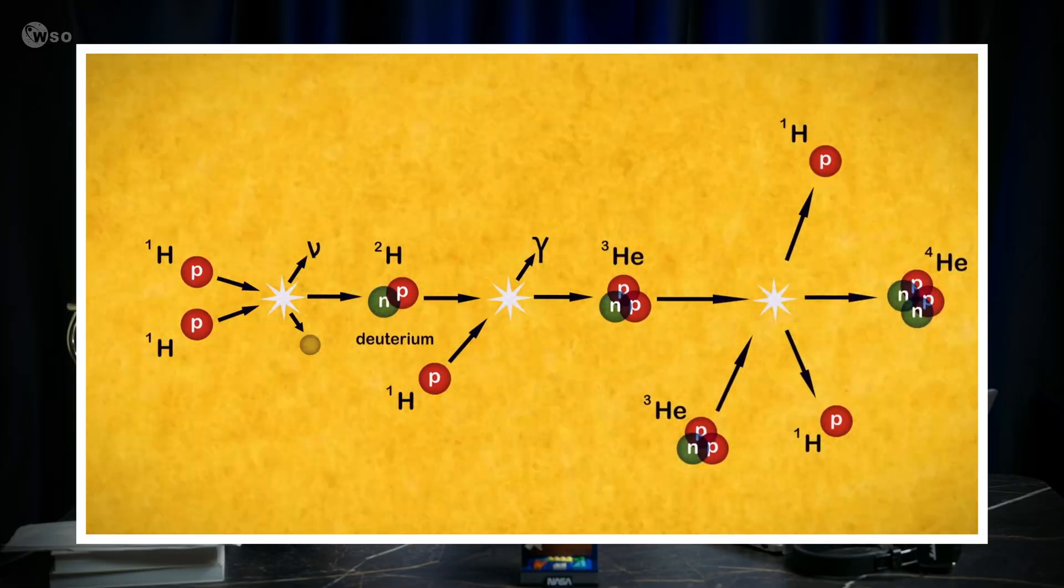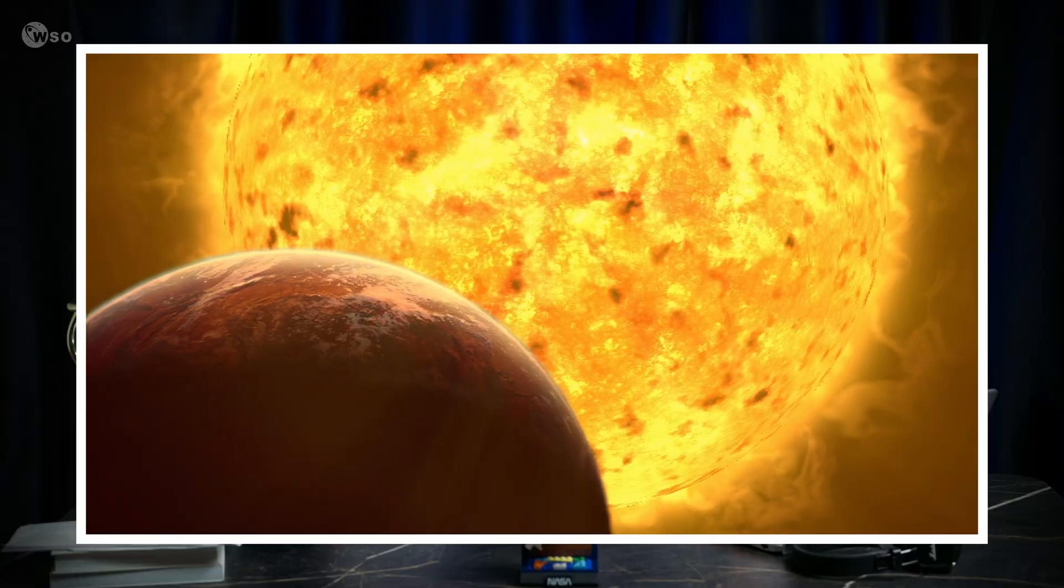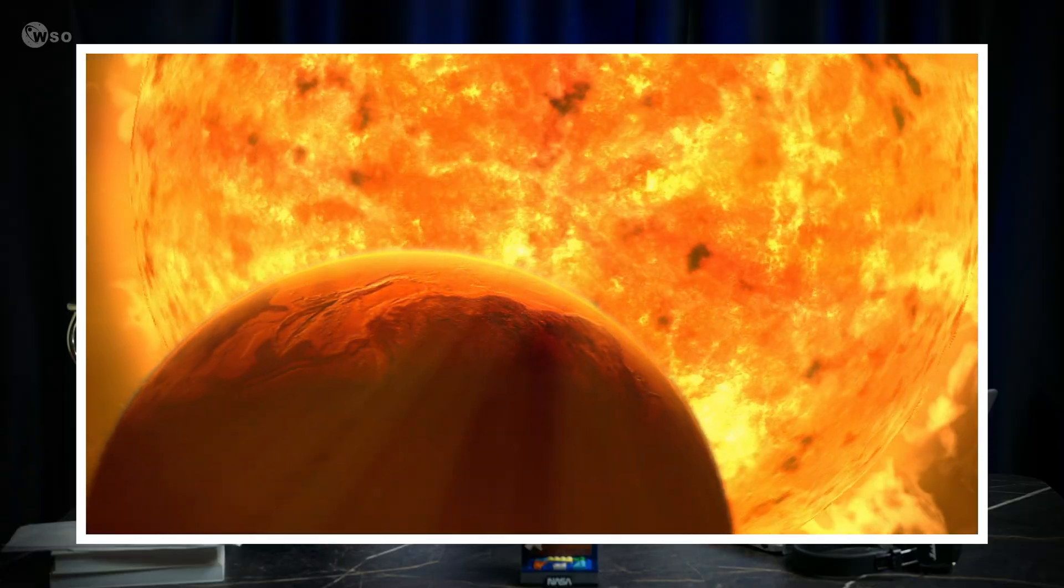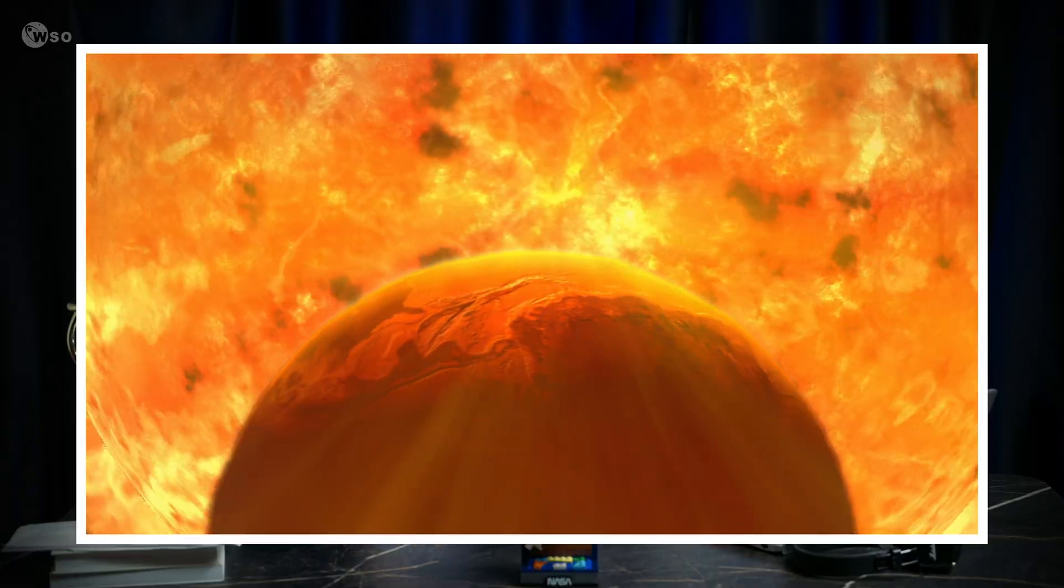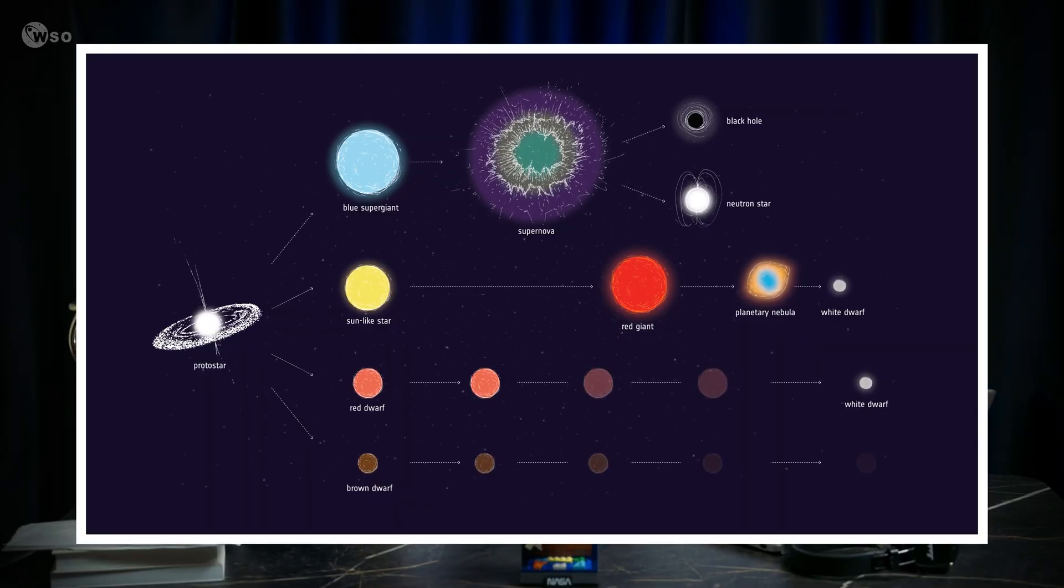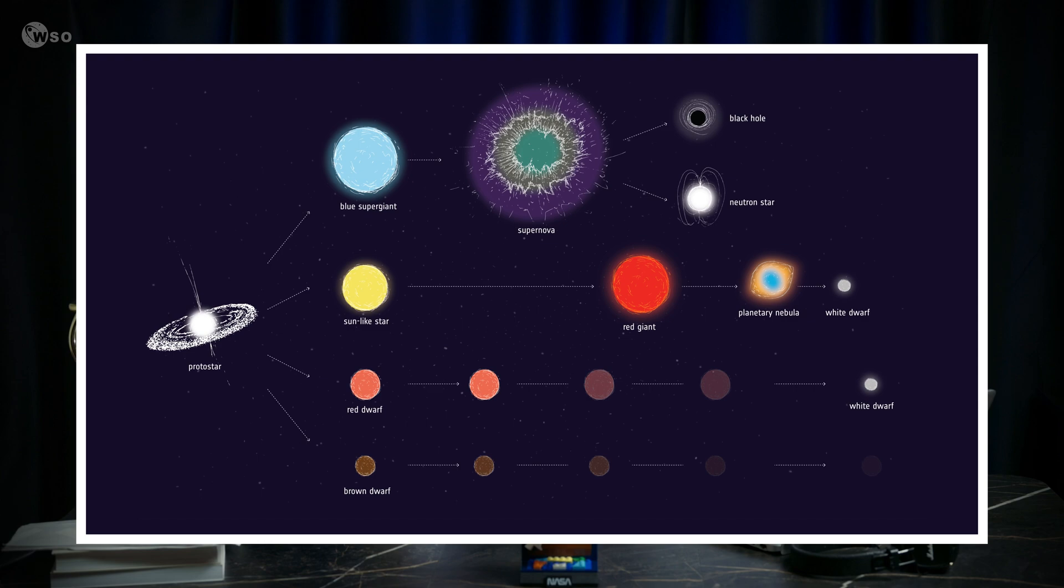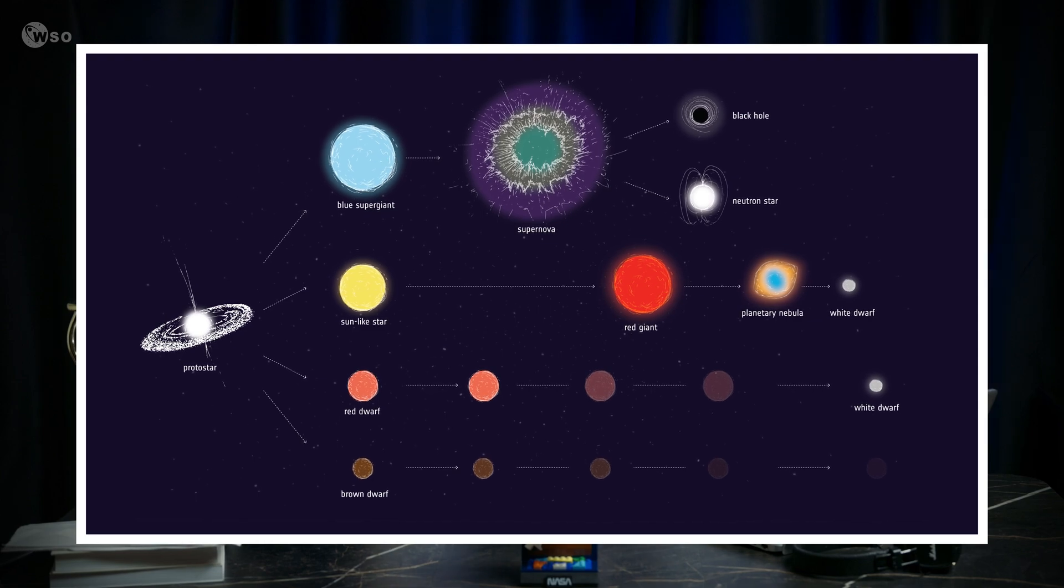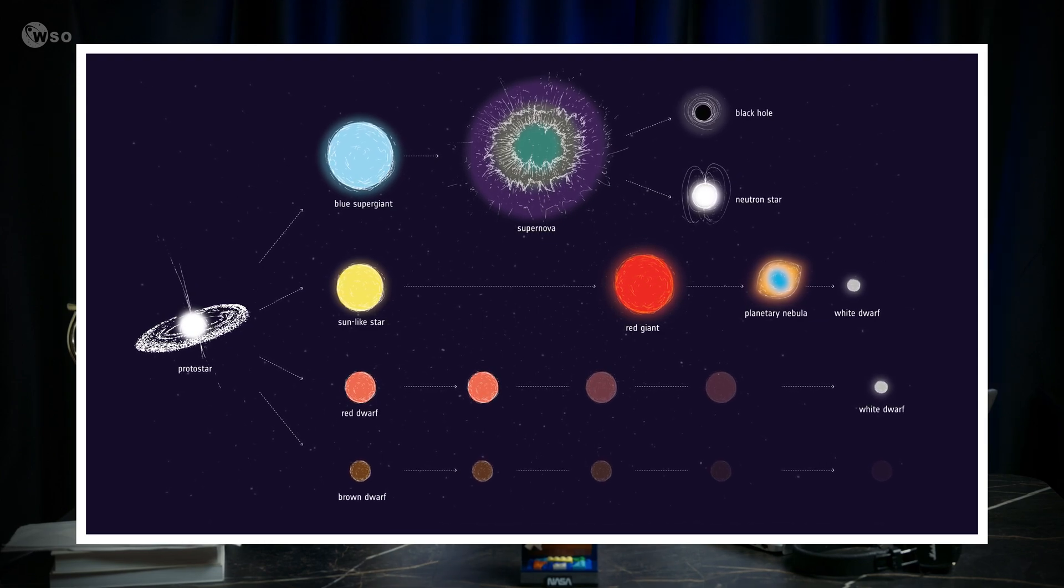When a massive star runs out of core fuel and swells into a red supergiant, that balance becomes fragile. It can expand, but only to a point. Models of stellar evolution show that red supergiants of realistic masses top out at roughly 1,500 solar radii, with only limited model-dependent room to exceed that.